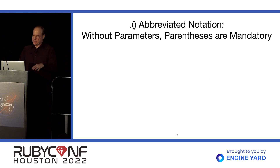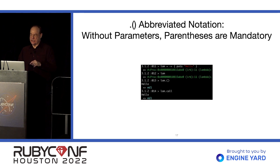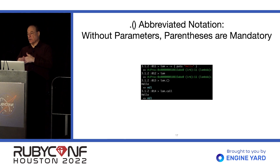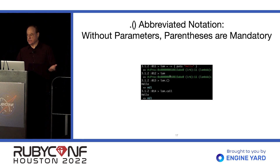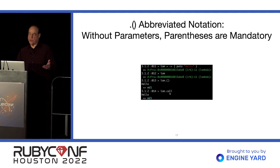The dot-parens notation is a little interesting in that you really need to use it. Normally in Ruby you don't need parentheses, but if you're using the dot-parens notation you do. Here we create a Lambda and try to execute it, but IRB just returns the Lambda object itself. Of course, if you use the conventional call method name, you don't need the parentheses.